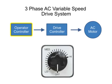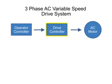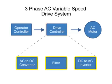An operator control device provides a means to start and stop the motor and adjust the operating speed. The drive controller consists of a variety of components that work together to convert an AC input into a frequency and voltage output necessary to change the speed of an AC motor.